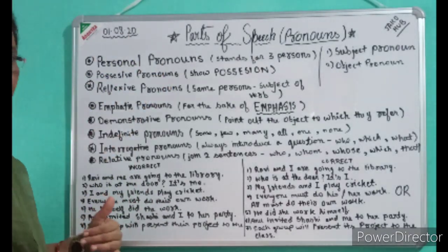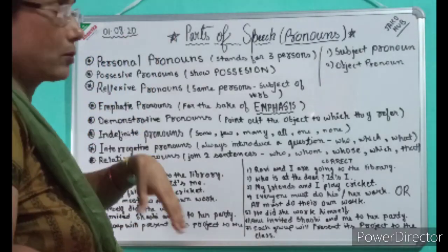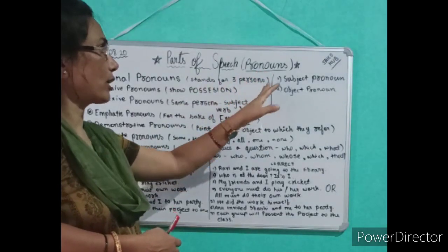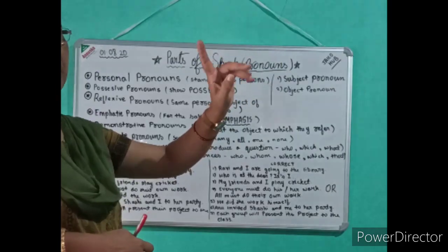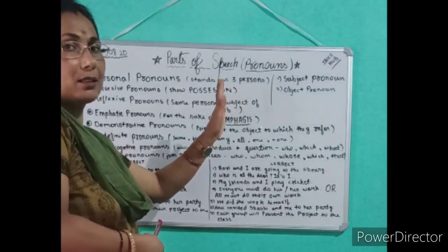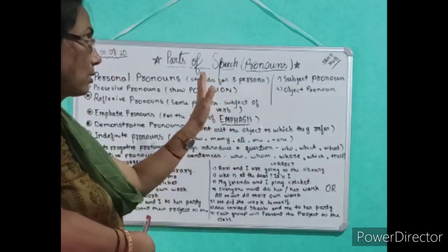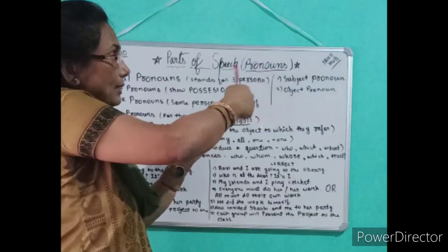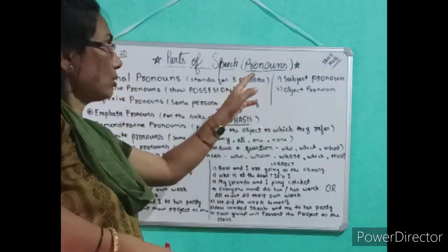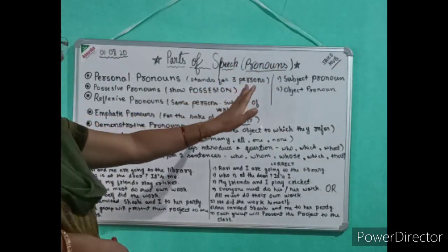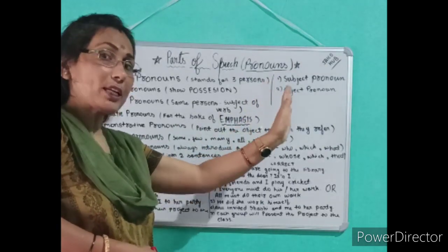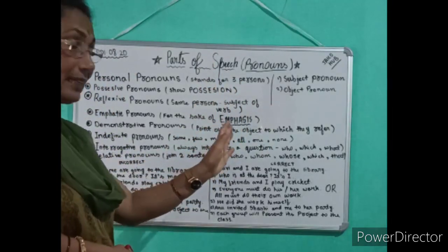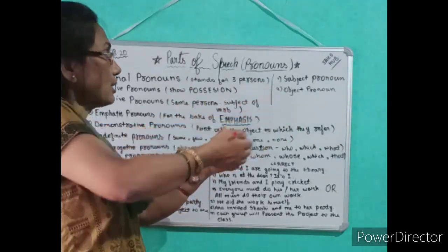Before going to examples of correct and incorrect sentences, I am going to summarize the chapter once again. Always keep in mind there are two types of pronouns: subjective pronoun and object pronoun. Subject stands for the subject; object stands for the object. For example, 'This book is mine. It is mine.' 'This' is the subject and 'it' stands for the book, so 'it' is the object of the sentence.